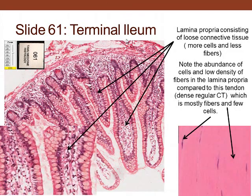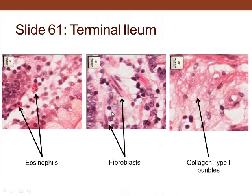Looking at the lamina propria, it supports the epithelium on the surface. We see simple columnar epithelium with goblet cells. The lamina propria, epithelium, and muscularis mucosa together make the mucosa, and below that is the submucosa. In this region we see eosinophils with a lobulated nucleus and big red granules, and fibroblasts — cigar-like cells with a nucleus and cytoplasm extending to either side.